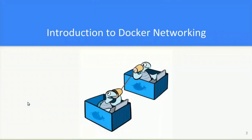Do you know how multiple Docker containers and services communicate with each other? And also, how they are able to communicate with non-Docker workloads? It is only possible because of Docker networking.